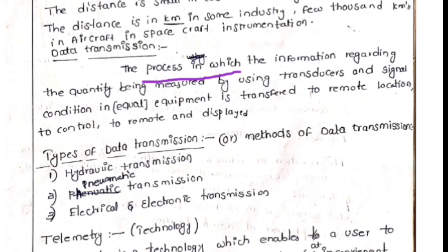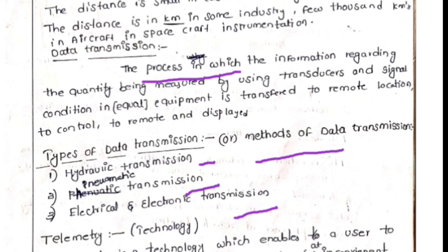There are several methods of data transmission: hydraulic data transmission, pneumatic data transmission, and electrical and electronic transmission. In hydraulic transmission, data is transferred via fluid. Pneumatic involves mechanical valves. Electrical and electronic instrumentation uses meters, transducers, and communication channels like data cables to transmit the data.